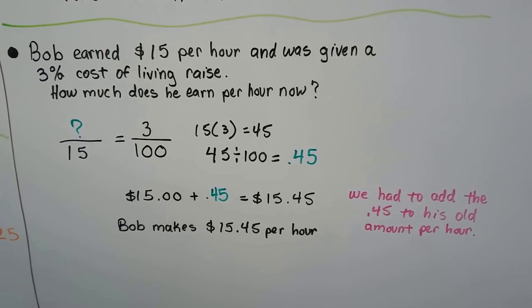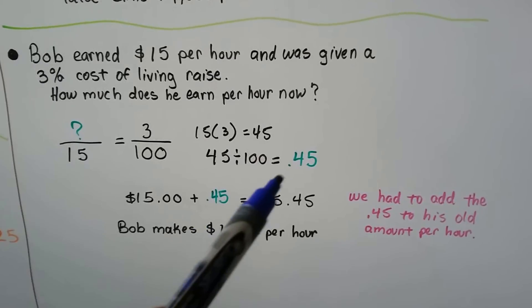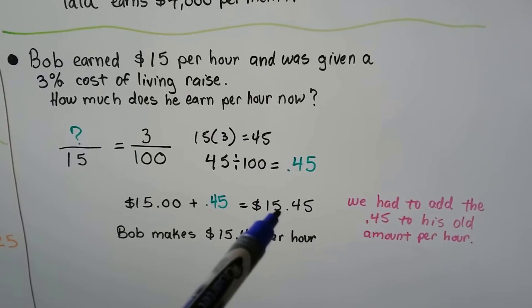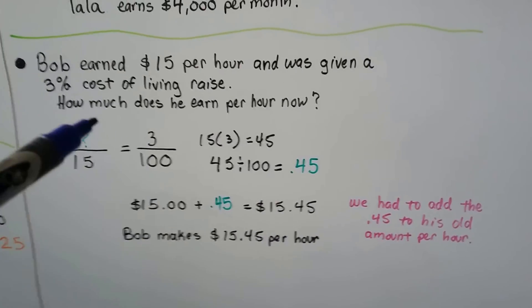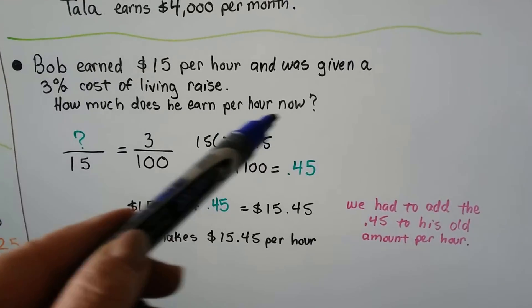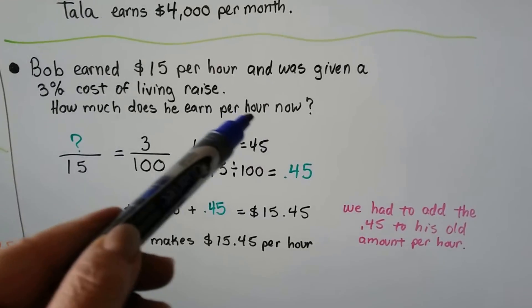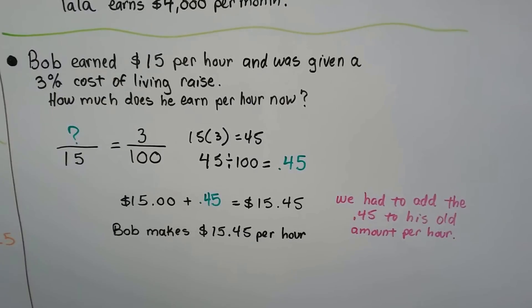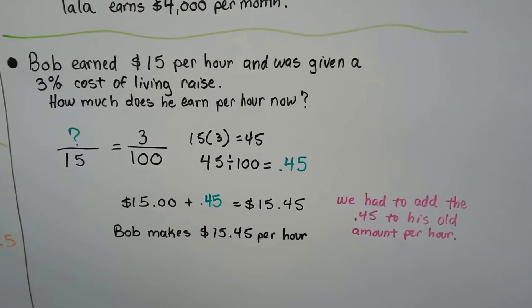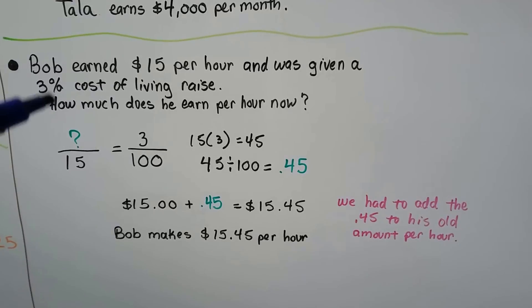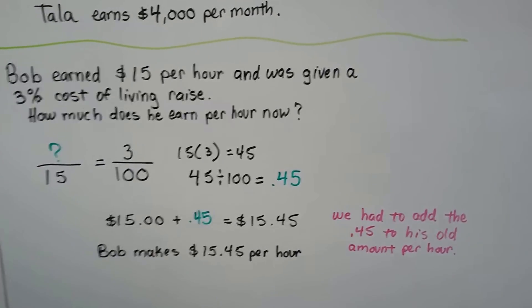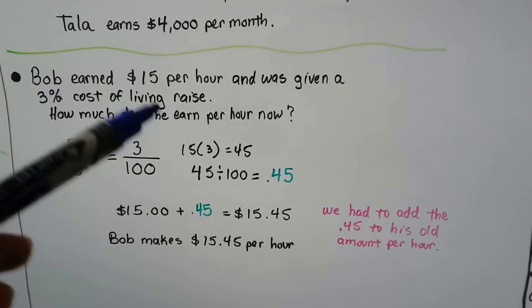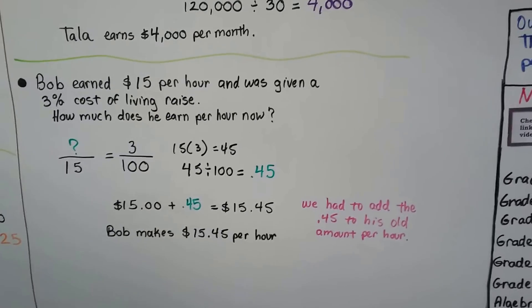So we weren't done. So it may trick you on the test and say one of the choice of the answers is 0.45 when really the answer is $15.45 because you have to answer exactly what it's asking of you. It's asking how much does he earn per hour now? He makes $15.45. Very important to answer what it's asking of you. If you're ever in doubt, read the question again and then look at your answer to make sure you are actually answering what it's asking.